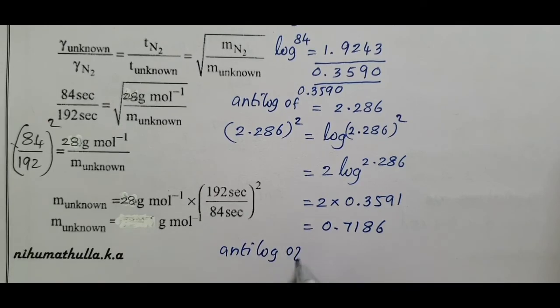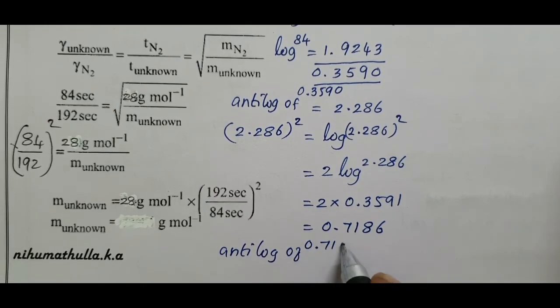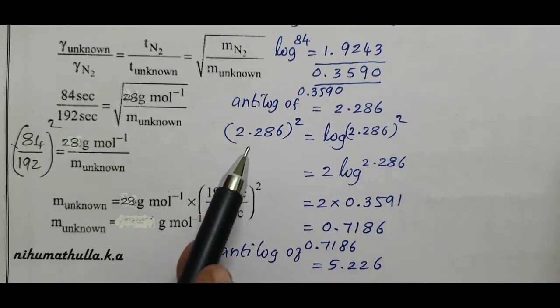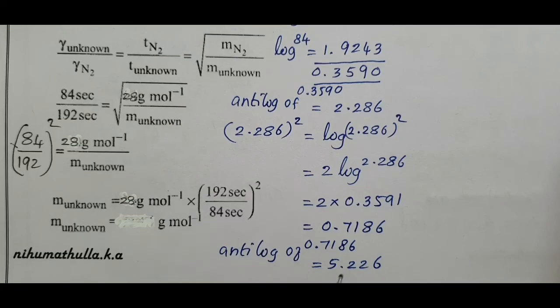Antilog of 0.7186 equals 5.226. This is the whole squared answer, so you multiply by 28.